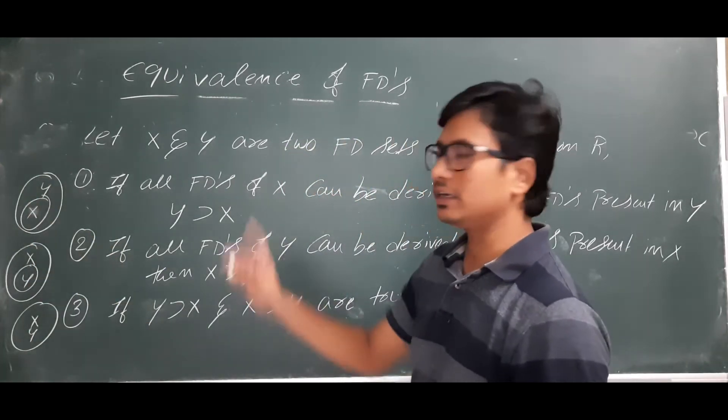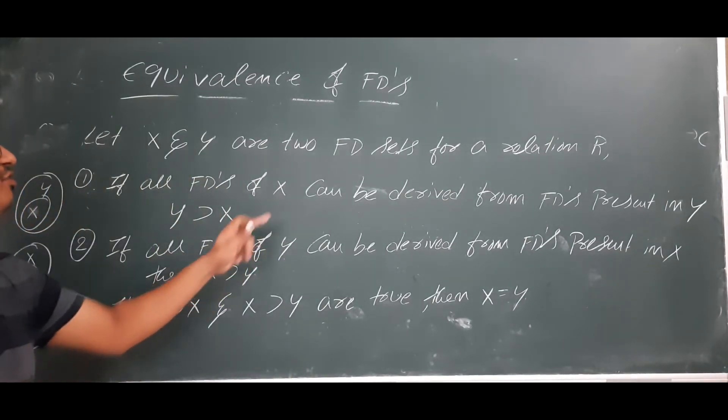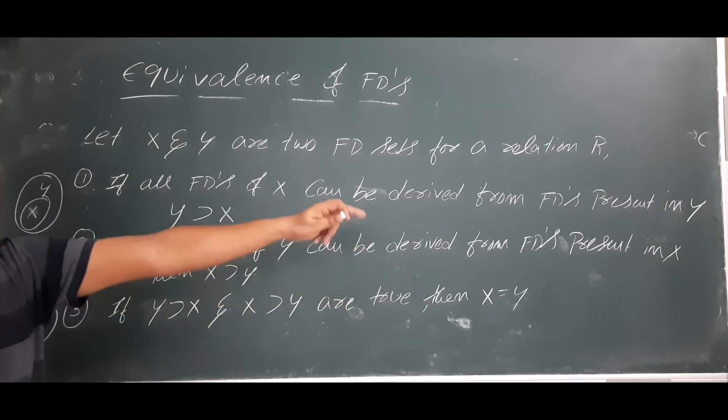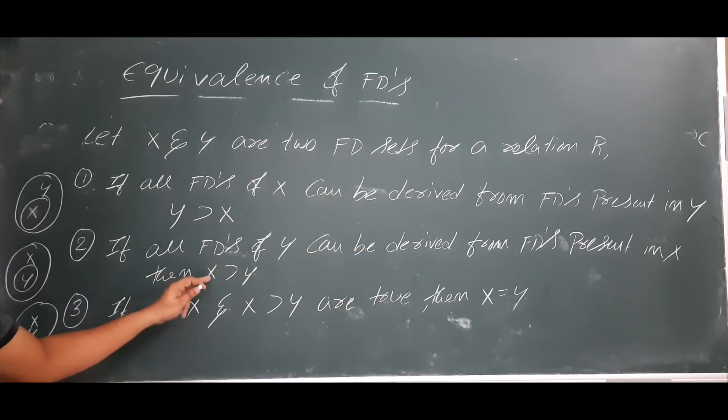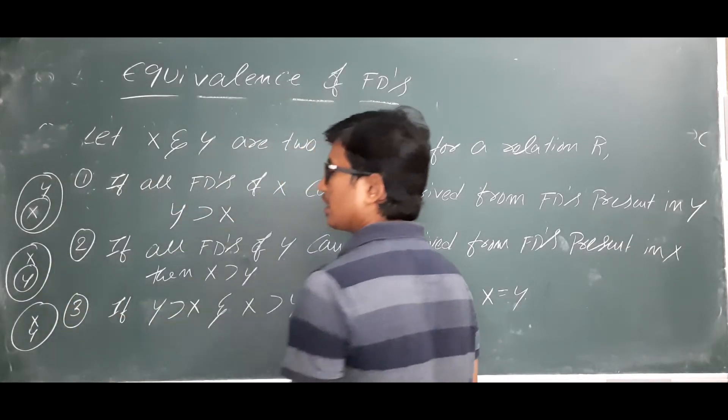Step two is: if all FD's of Y can be derived from FD's present in X, then we will say that X covers Y. We will represent this in the Venn diagram.